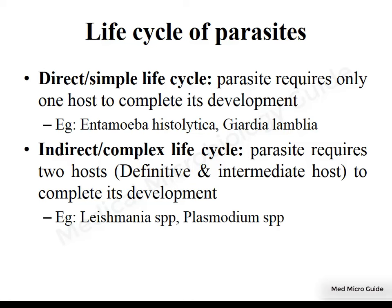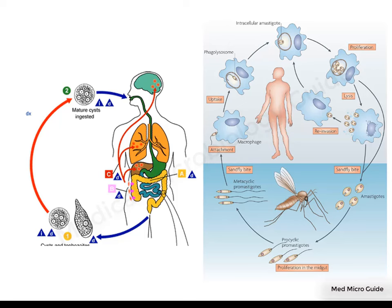An indirect or complex life cycle is one in which the parasite requires two or more hosts — one called the definitive host and the other the intermediate host. Example: Leishmania species, where the intermediate host is the sandfly vector which transmits infection from one person to another. In a direct life cycle, only one host is involved, whereas in an indirect life cycle, two hosts are involved.